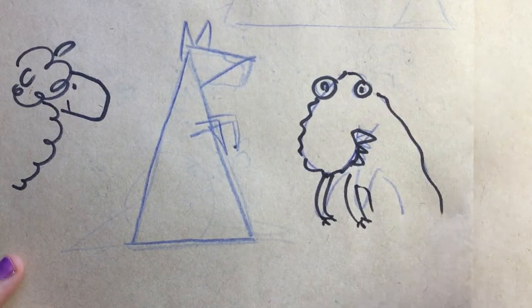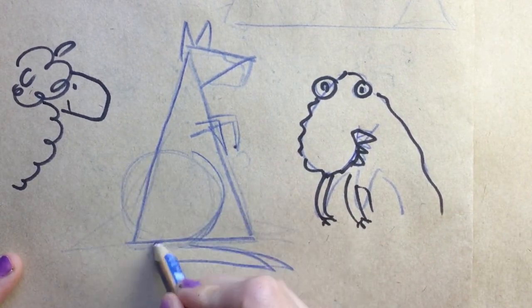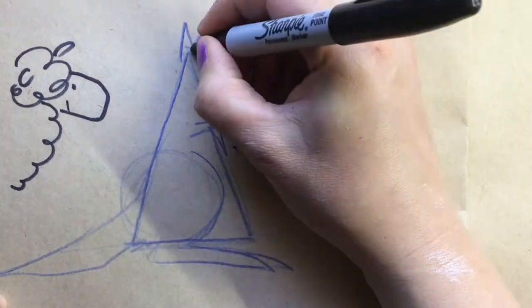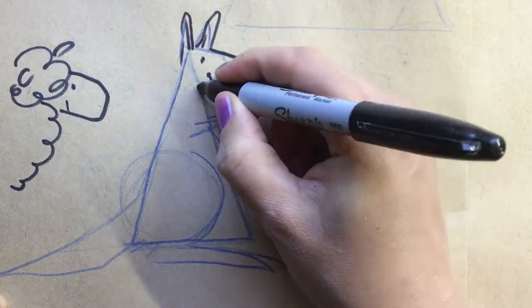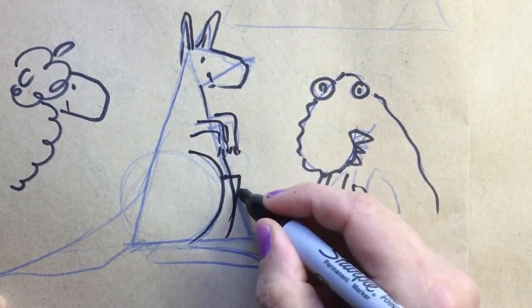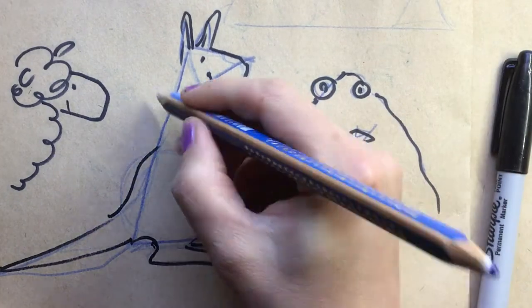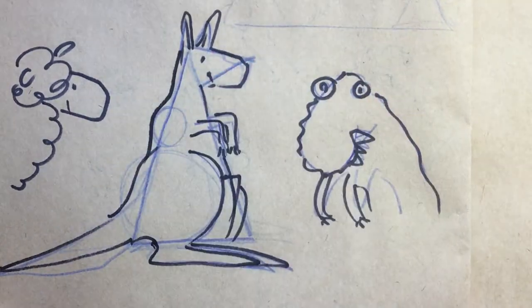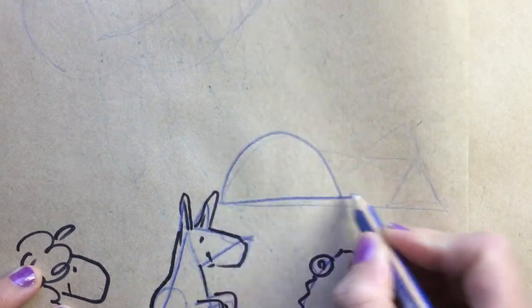They've got T-Rex arms, obviously a big circle for their big powerful back legs, and their tail's really big and strong so you have to make sure that's really long and thick. They've got big arm muscles.